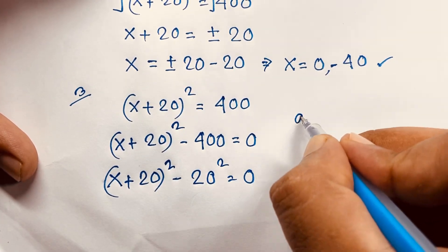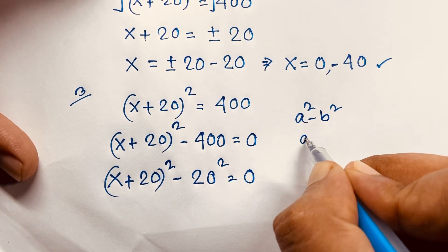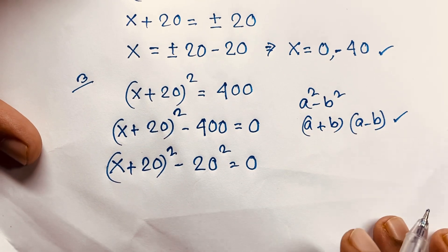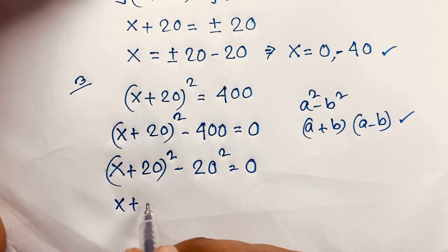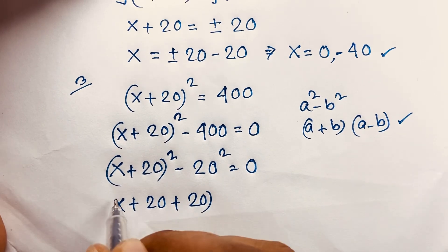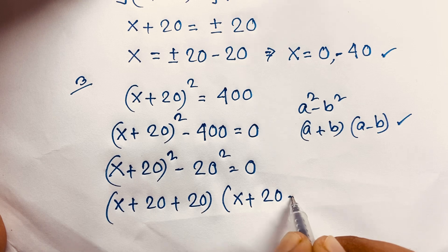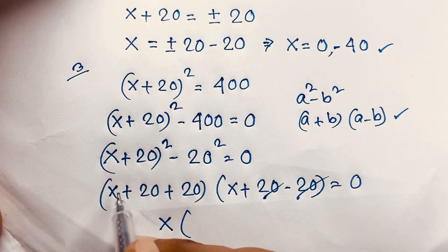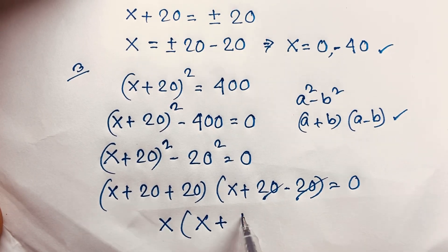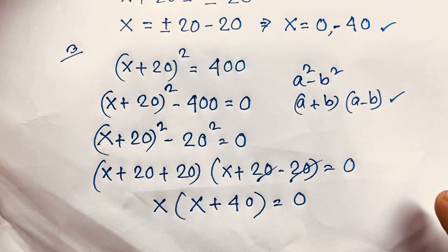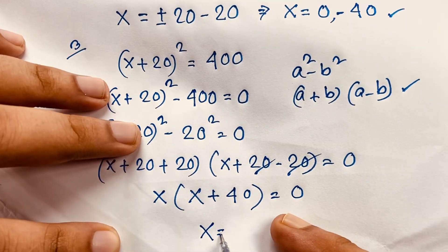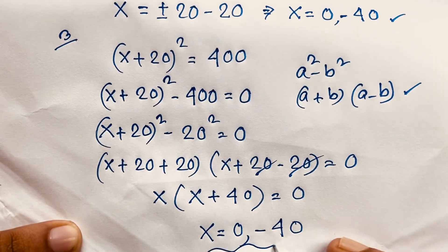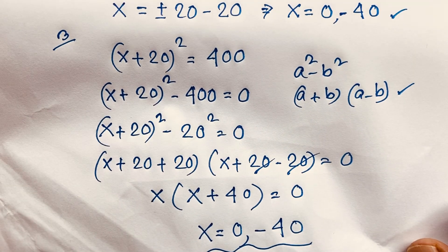I apply the difference of squares formula here, so it becomes (x + 20 + 20)(x + 20 − 20) = 0. The 20s cancel in the second bracket giving x, and the first bracket gives (x + 40) = 0. So two cases: x = 0 or x + 40 = 0, which means x = −40. Our final answer is x = 0 or x = −40.